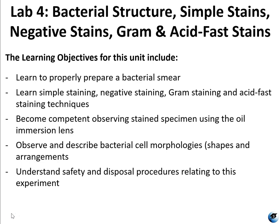The learning objectives for this unit include learning to properly prepare a bacterial smear, learning about simple staining, negative staining, how to do gram staining, acid fast staining, how those techniques work and sometimes don't work, becoming competent at observing stained specimens using the oil immersion lens — that's the 100x objective lens — observing and describing bacterial cell morphologies, which are the shapes and arrangements. Make sure you understand that cell morphologies are completely different from colony morphologies. And as always, understanding the safety and disposal procedures related to all of these experiments.